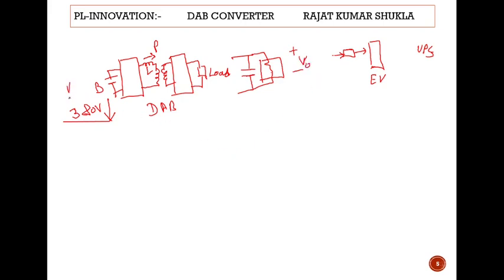This is a bidirectional converter, so you can transfer power from bridge 1 to bridge 2, or bridge 2 to bridge 1, depending on phi — what is the phase shifting. What is the meaning of phase shifting? That means if you are applying switch 1 — just recall the dual-active bridge converter circuit — this is switch 1's pulse signal, and this bridge's switch 1 dash signal. Let's assume this is pi by 2, or 90 degrees.